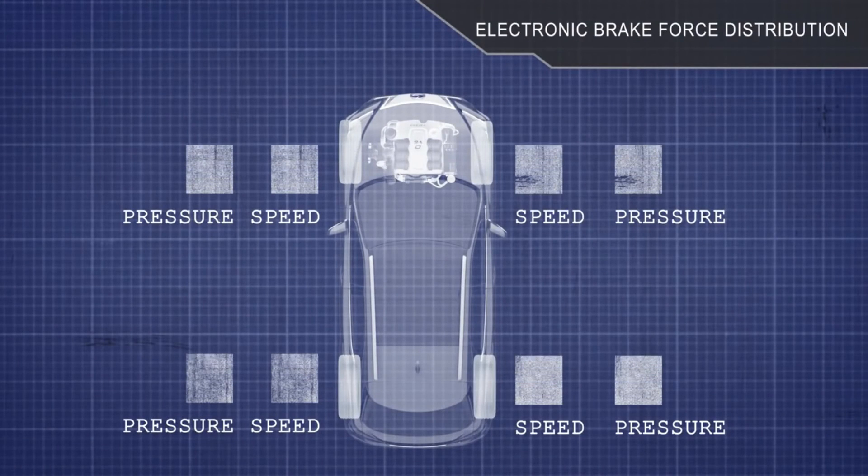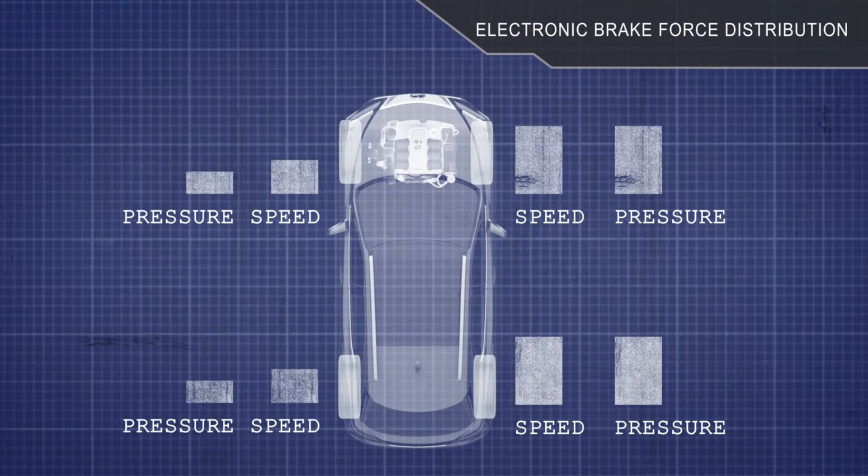ABS wheel speed sensors are designed to detect this wheel speed difference before it turns into a full-fledged skid and begin to reduce pressure to the less loaded wheels.